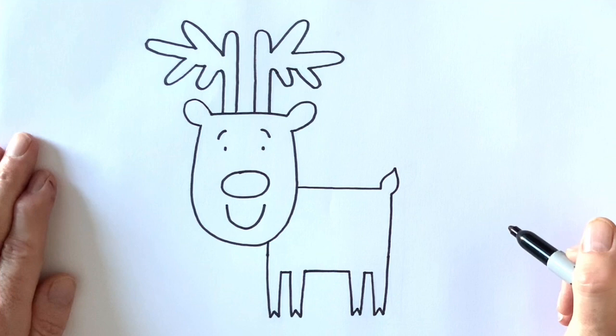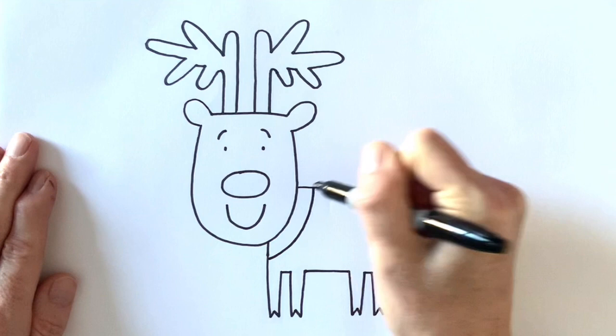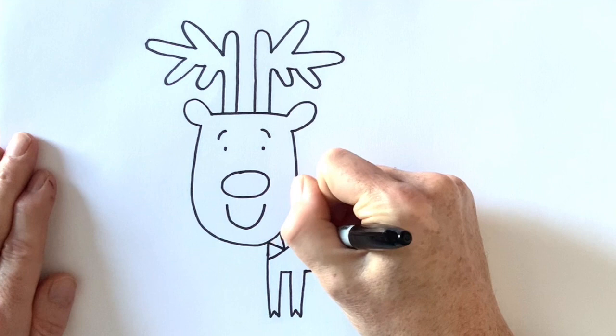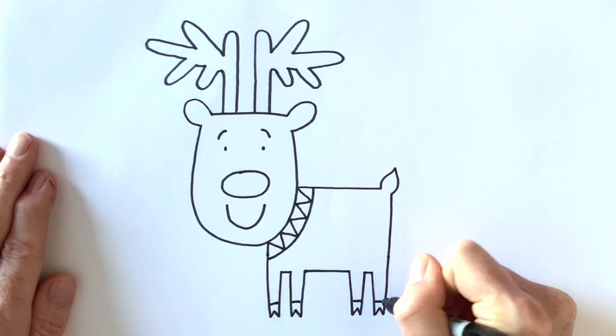What else can we add? We can add a collar for a bit of interest. And you can put any pattern you like in the collar, but I'm going to draw some zigzags. They'll be fun to color in later. And I'm just going to draw lines across the legs here to make those hooves a bit hoofier.